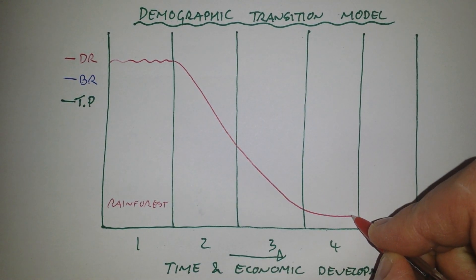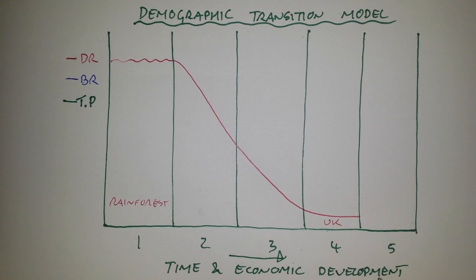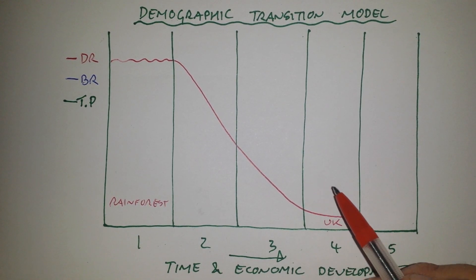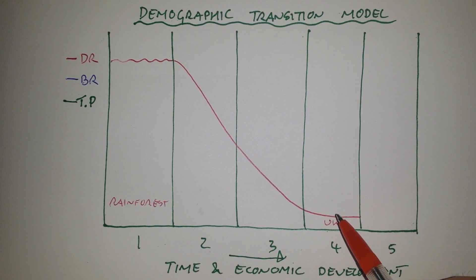And then you eventually get to stage four, which is where the UK would be. And you've got a low and steady death rate because we've got medicine to sort out all of our problems.